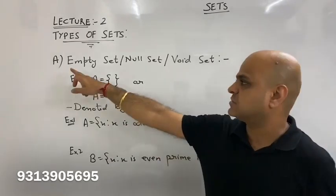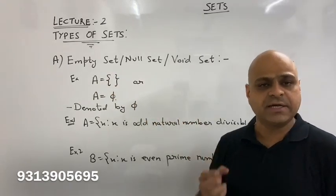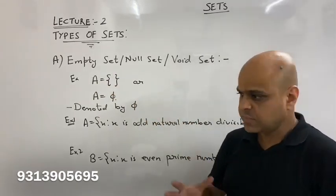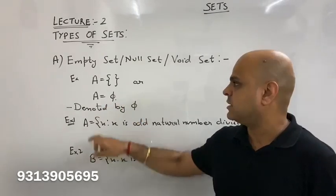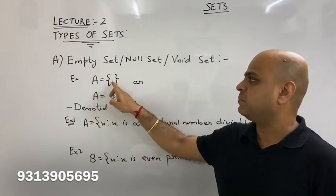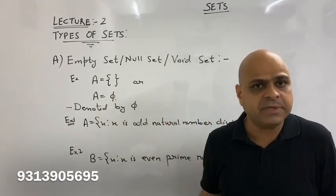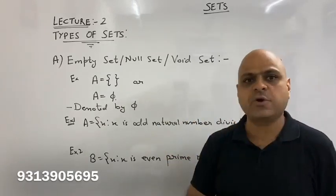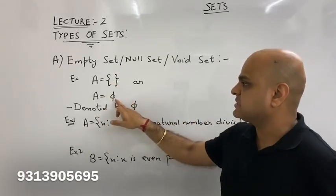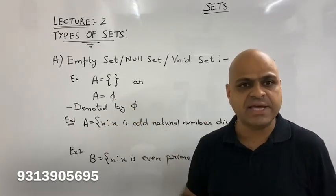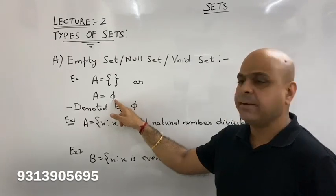The first set is Empty Set, also called Null Set and Void Set — there are three names for it. An empty set is a set that has no element. For set A, we put curly brackets with nothing in it, because there is no element. This is the Empty Set, denoted by the symbol phi (∅), which also represents an Empty Set.